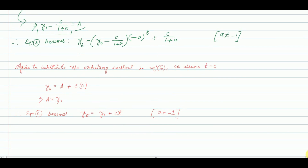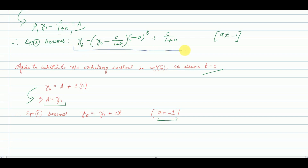We also need to find the arbitrary constant A for the second solution. Substituting t = 0 into equation 6, we get y(0) = A + c·0, thus A = y(0). Substituting into equation 6, the solution becomes y(t) = y(0) + c·t when a = −1. So finally we have two solutions: y(t) = [y(0) − c/(1+a)]·(−a)^t + c/(1+a) when a ≠ −1, and y(t) = y(0) + c·t when a = −1. This is how we find the solution of a standard first order difference equation, and these two solutions will be used in solving numerical problems in the next classes.